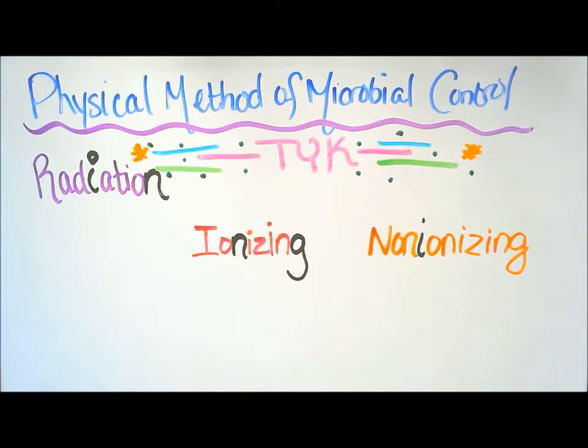It's time to test your knowledge. So I'll ask you a few questions starting with question number one: what are the two types of sterilizing radiation? The second question: what are the three examples of ionizing radiation? And the last question: give me an example of a non-ionizing radiation.